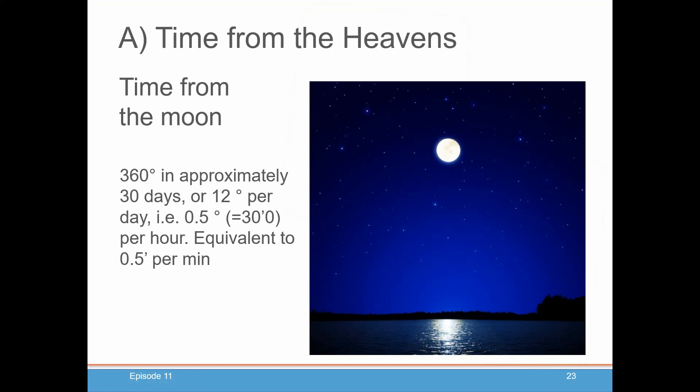As I had mentioned, one option was to try to find the time using something in the heavens, say time from the moon. We know the moon moves approximately 360 degrees in just 30 days or about 12 degrees per day or about half a degree or 30 minutes an hour, which is pretty quick against the background of the stars. That's equivalent to a half of a minute of arc per minute. If you could measure that fairly accurately, that would probably give you a good approximation of time.